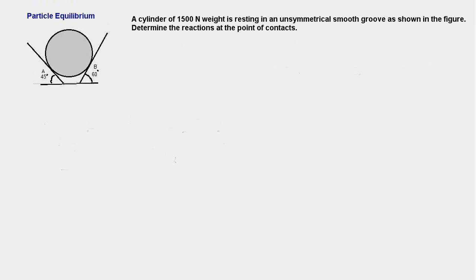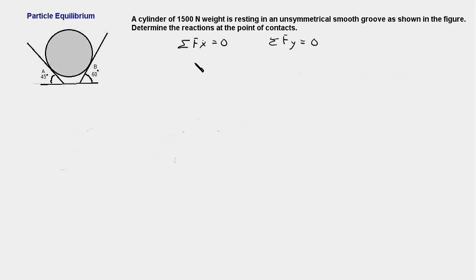In this problem we have a cylinder of 1500 Newton weight which is resting in a smooth groove as shown in the figure and we have to find the reactions at the contact points A and B. Since the cylinder is in equilibrium, the conditions of equilibrium will have to be satisfied. The two equilibrium equations are sigma Fx equal to 0 and sigma Fy equal to 0. These equations tell us that the sum of x and y components of all the forces acting on the cylinder must be 0.